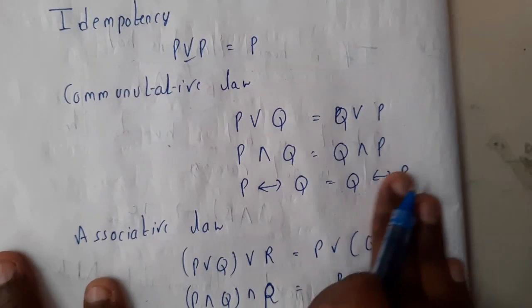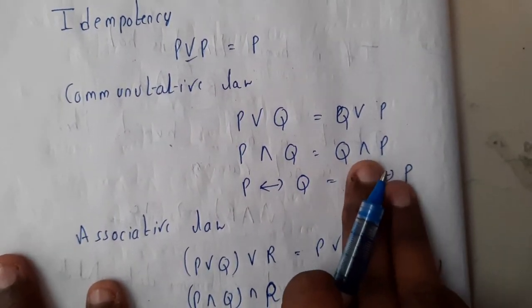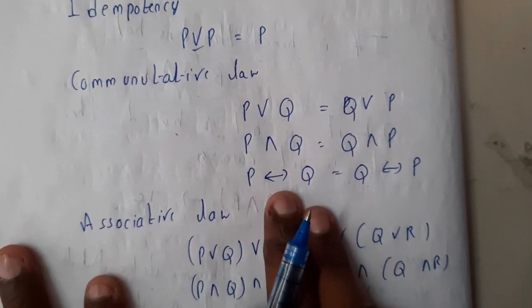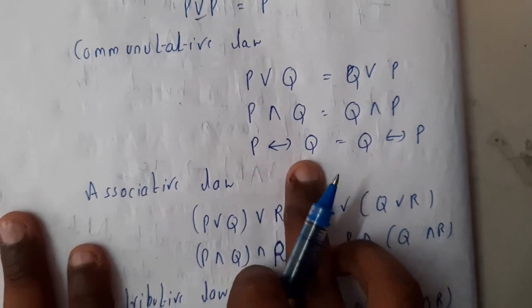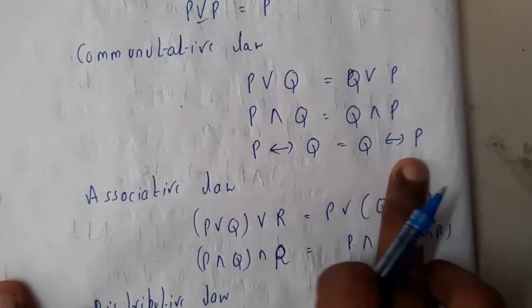P and Q is Q and P. P implies Q is not equal, so that's the reason why I just skipped it. P double implies Q is equals to Q double implies P.